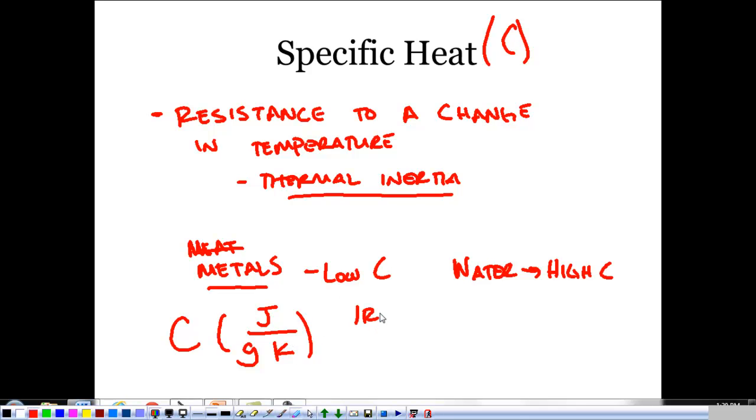For something like iron, we have a low specific heat, something close to 0.45 joules to raise one gram one degree kelvin.